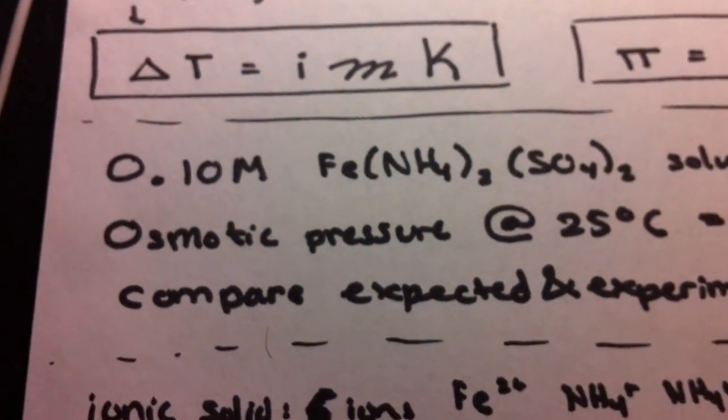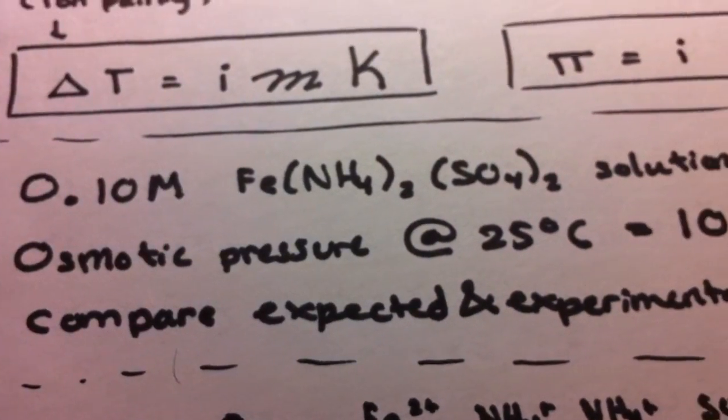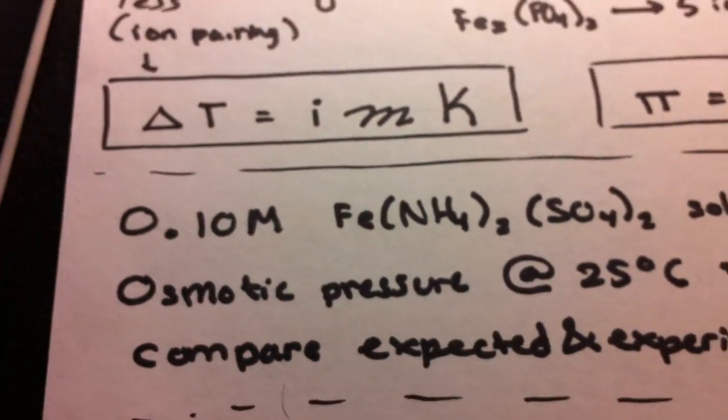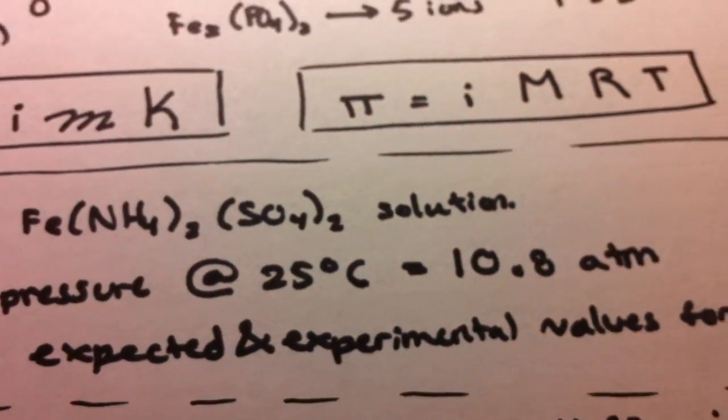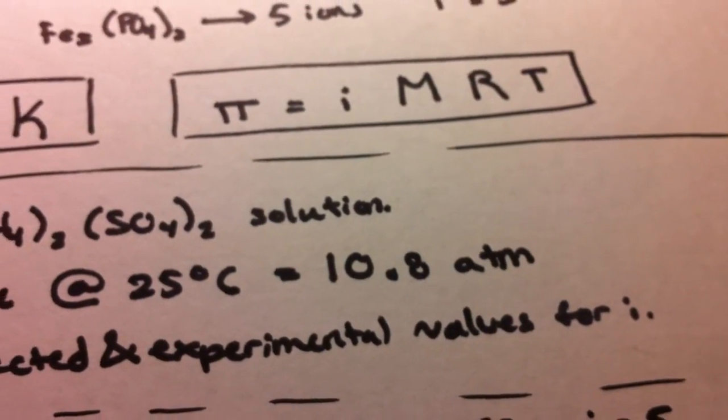So let's say we have 0.10 molar Fe(NH4)2(SO4)2 solution. The osmotic pressure, as we calculate for 25 degrees Celsius, is 10.8 atmospheres.